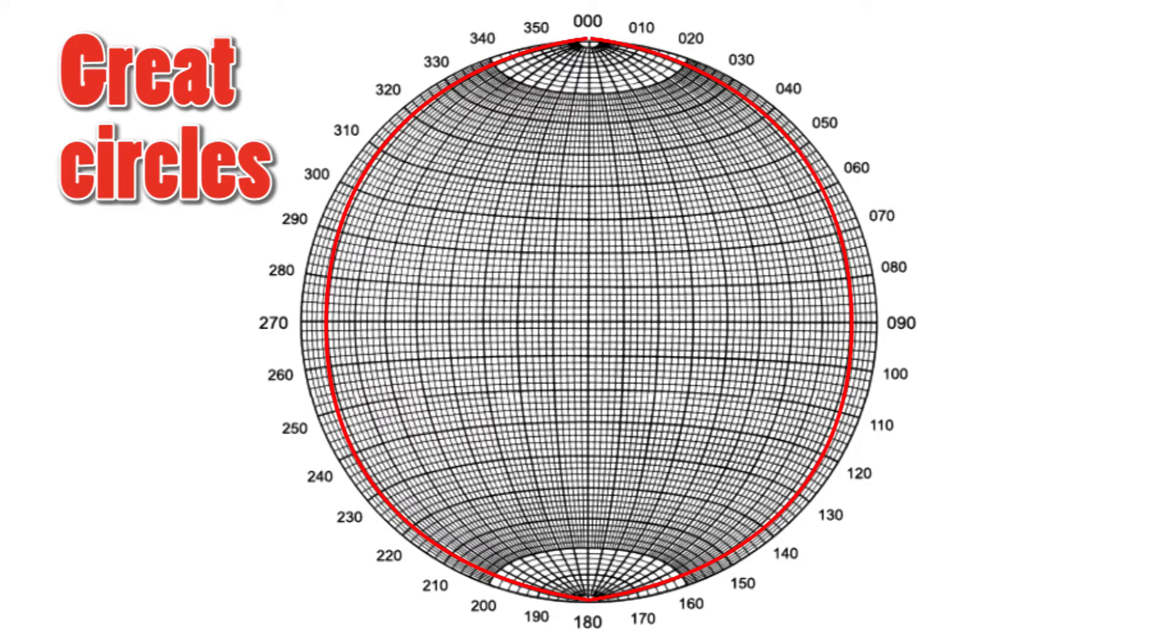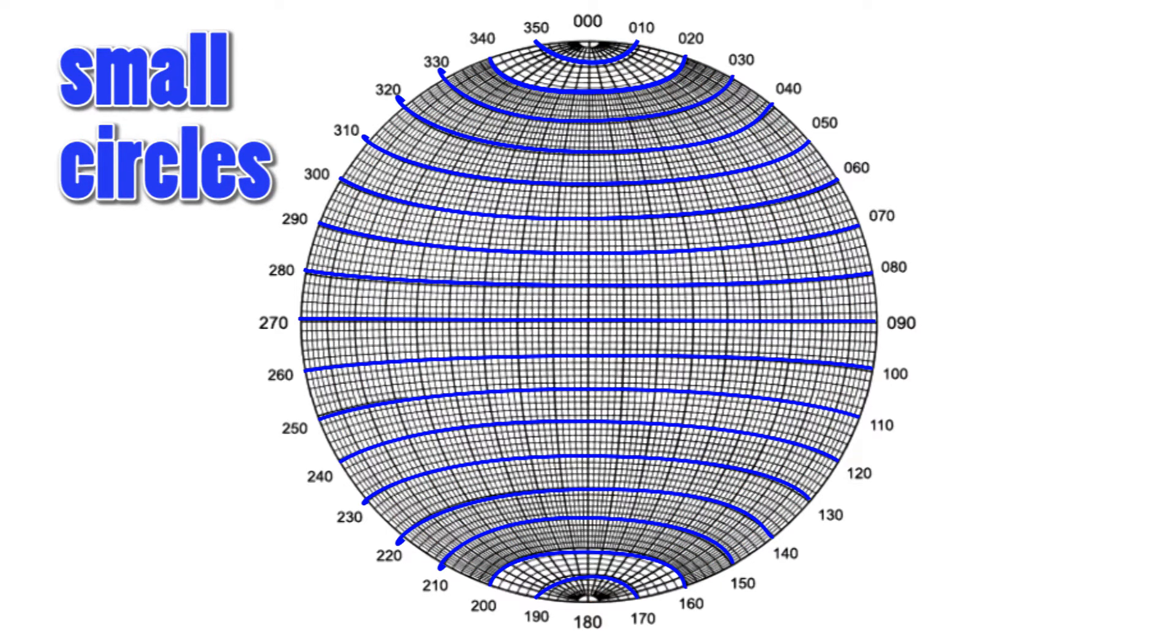First I need to mention that the lines on a stereonet that go from north to south are called great circles, while these lines that trend east-west with only the equatorial line truly going through east and west are called small circles.